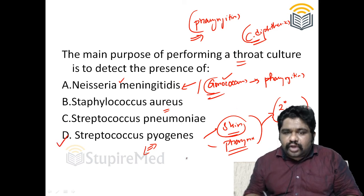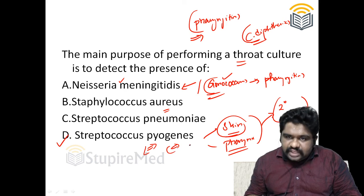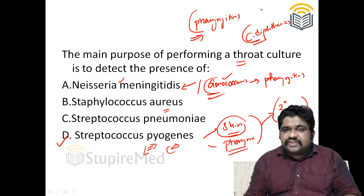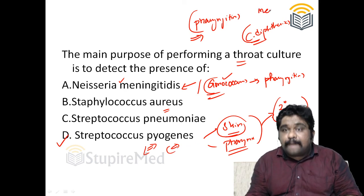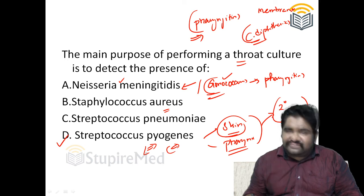Streptococcus pyogenes can cause pyogenic pharyngitis, while Corynebacterium diphtheriae is known for causing membranous pharyngitis, and that makes all the difference.